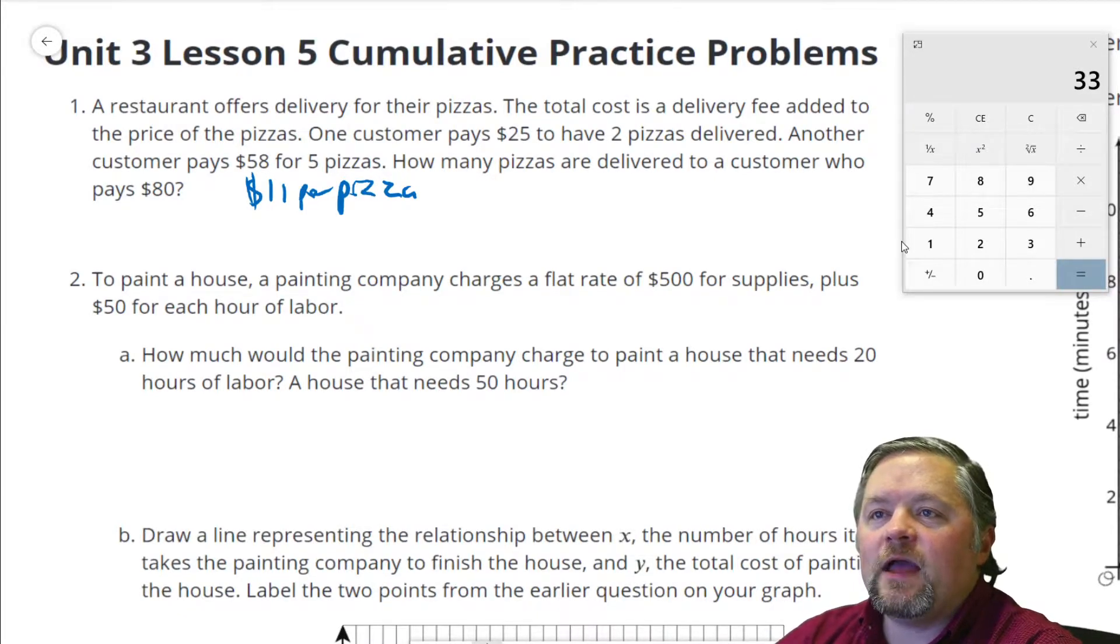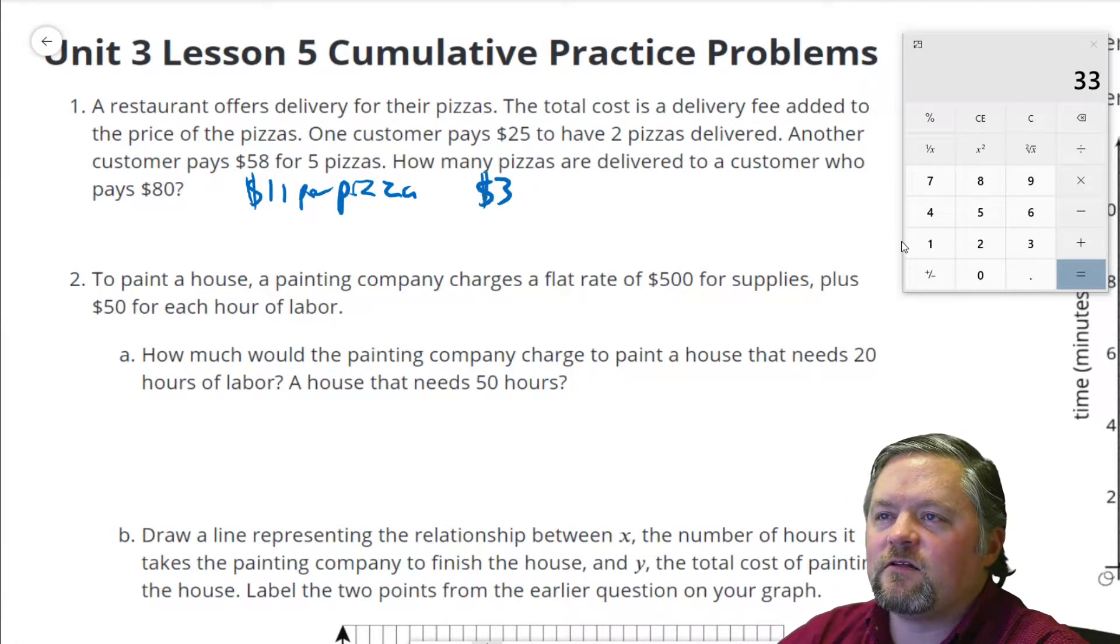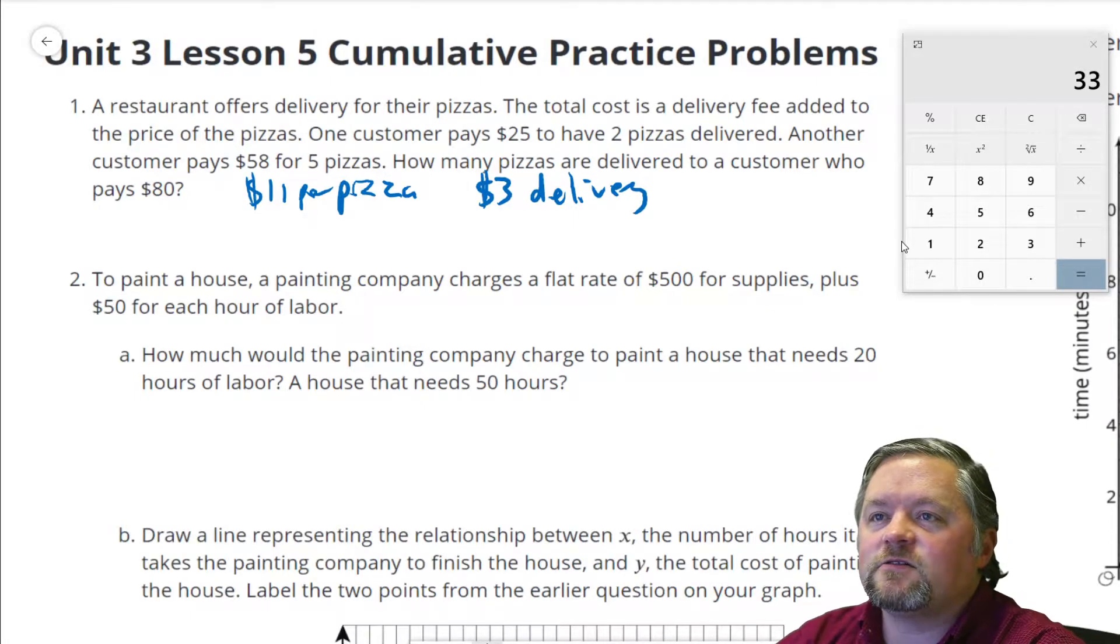If we are paying $11 per pizza, how much do we pay for delivery? Well, two pizzas at $11 a piece would be $22, $23, $24, $25. That seems like $3 for the delivery. Now let's check with this other one. $58 for five pizzas. Five pizzas at $11 each would be $55, $56, $57, $58, that also seems like $3 for delivery.